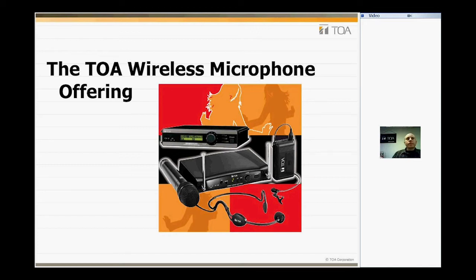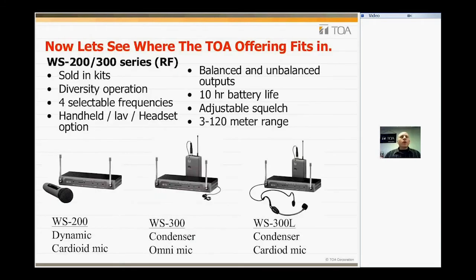Now we're going to go into the TOA wireless line offering. We're going to start off with the WS200 and 300 series — these are RF products, and this is probably the beginning point of what we offer, more of our intro-level economy style product. They are sold in pre-configured kits, either including a handheld microphone and receiver, a lavalier clip-on microphone and receiver, or a headset clip microphone. Each of these units has four selectable frequencies, and there are various banks of bands available.